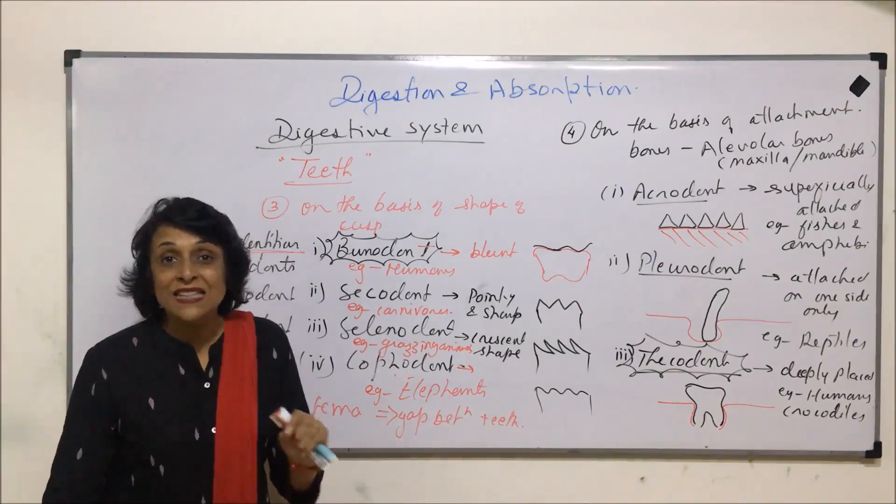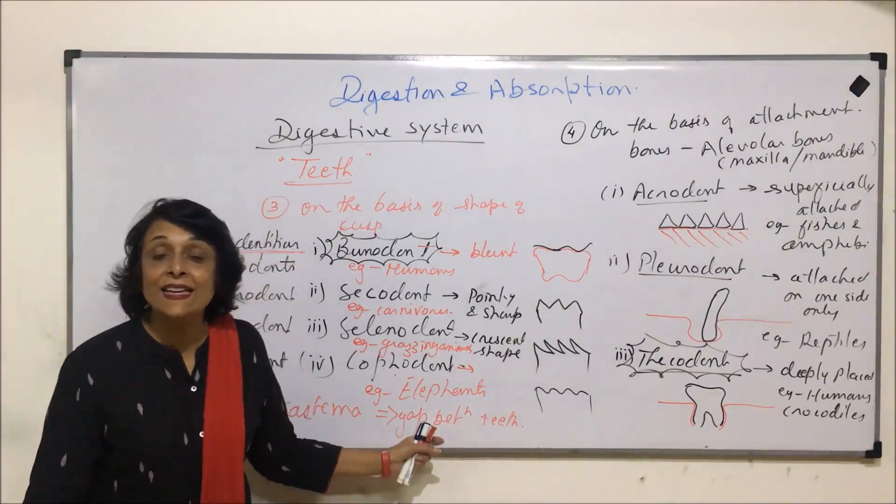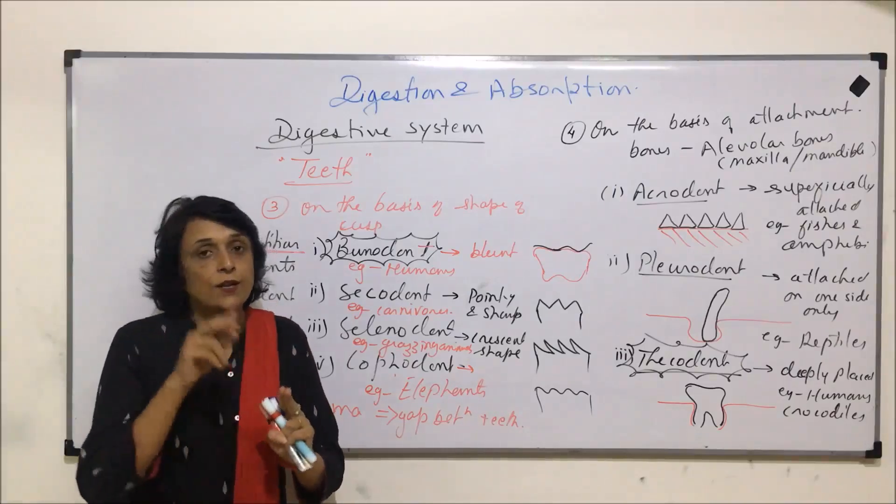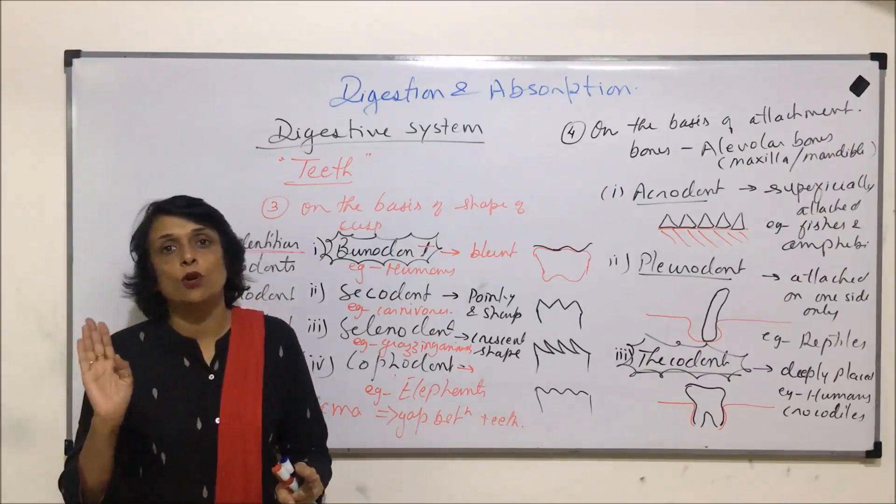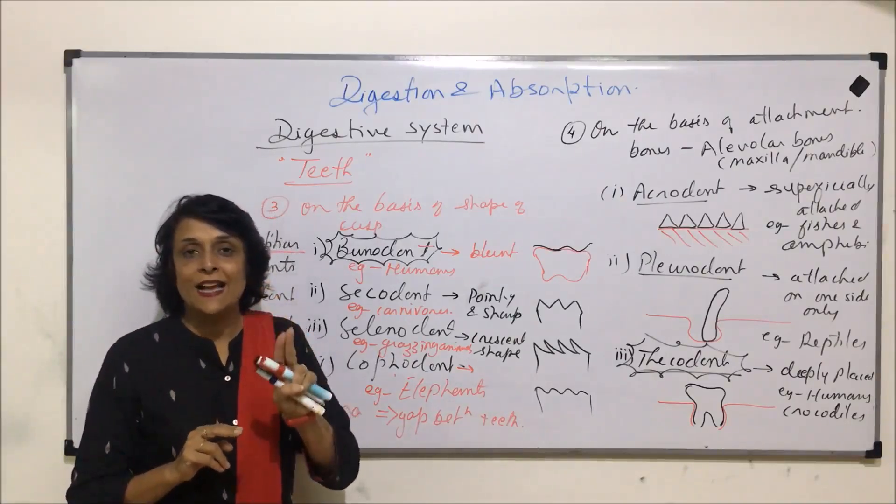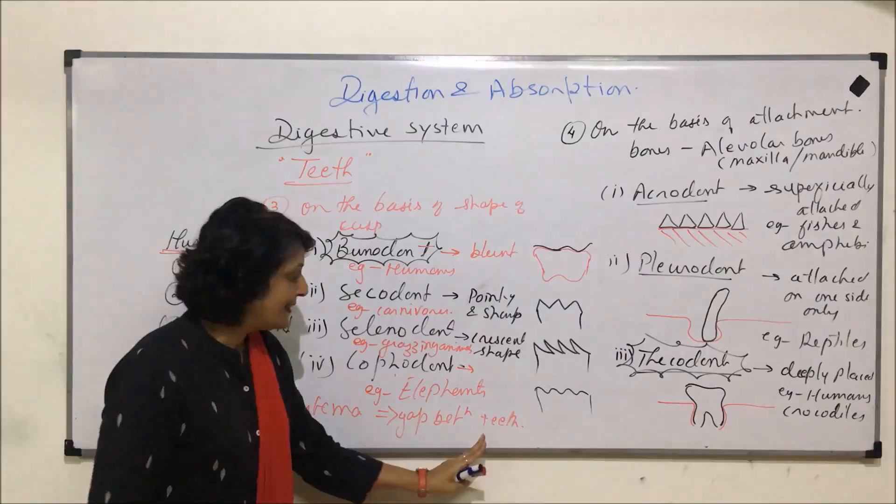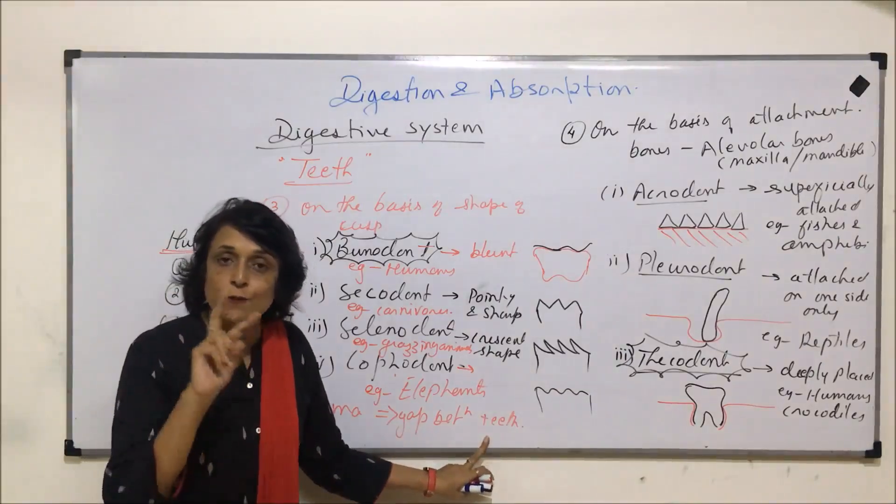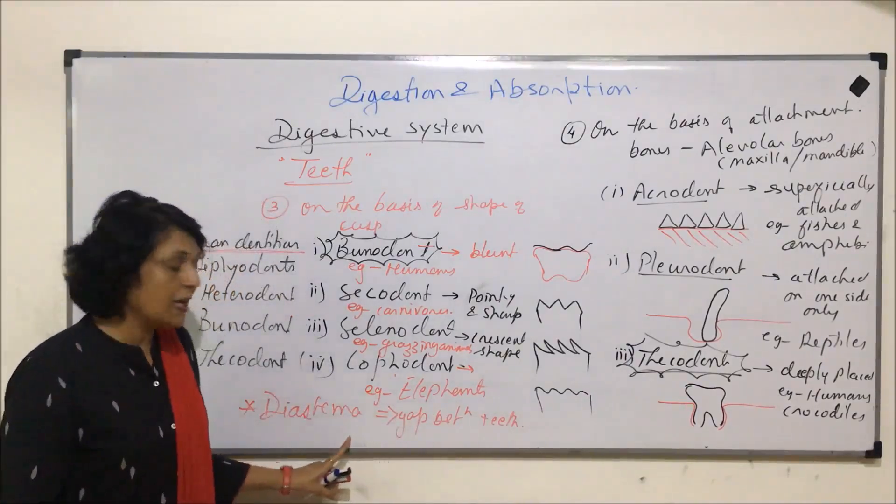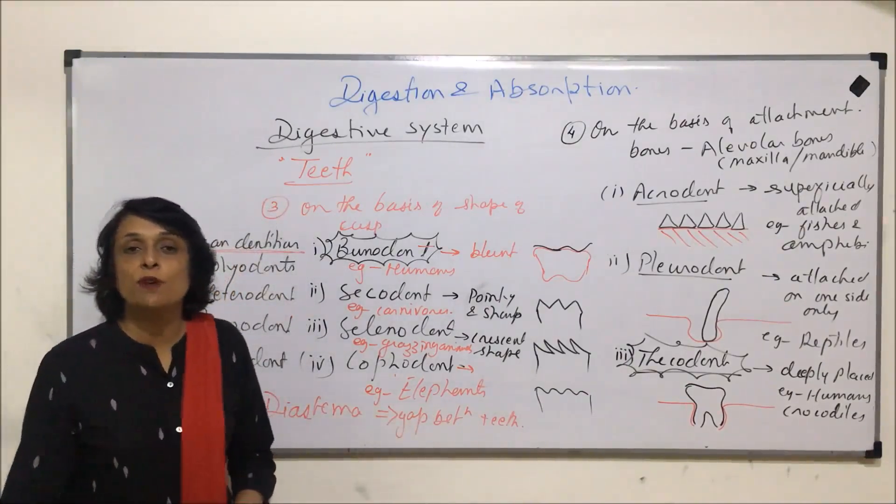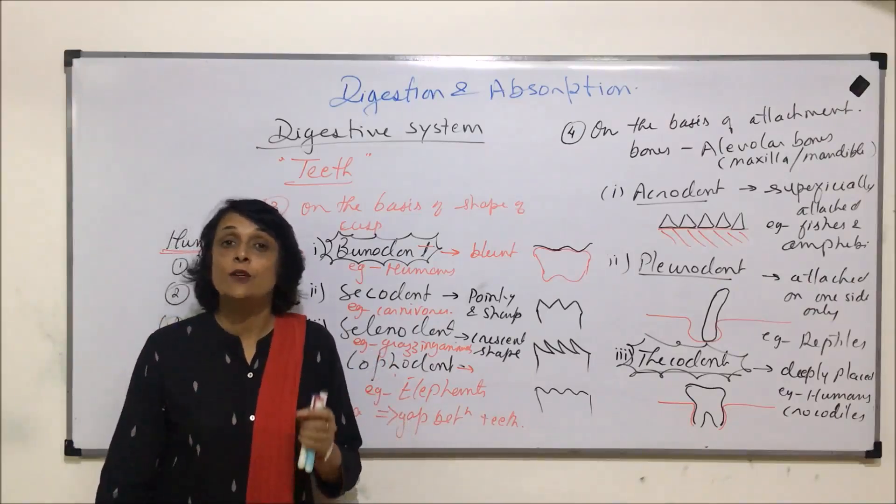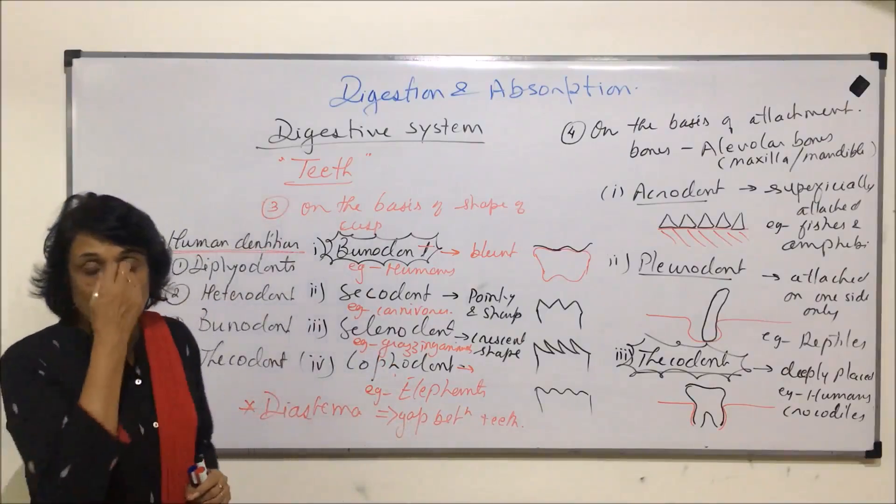They do not eat meat. And that is why canines are absent. So incisors, no canines and then premolars and molars. That means there is a gap between incisors and premolars. That gap or such kind of gaps between different types of teeth is known as diastema. So in case of rabbit, that diastema is present between incisors and premolars as they do not have canines.